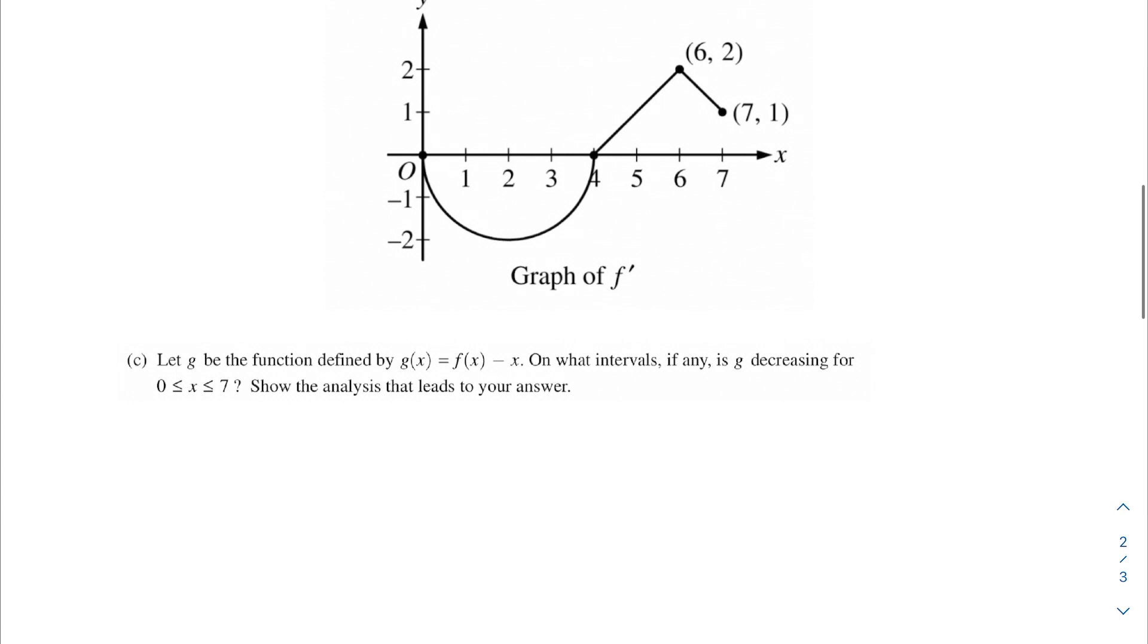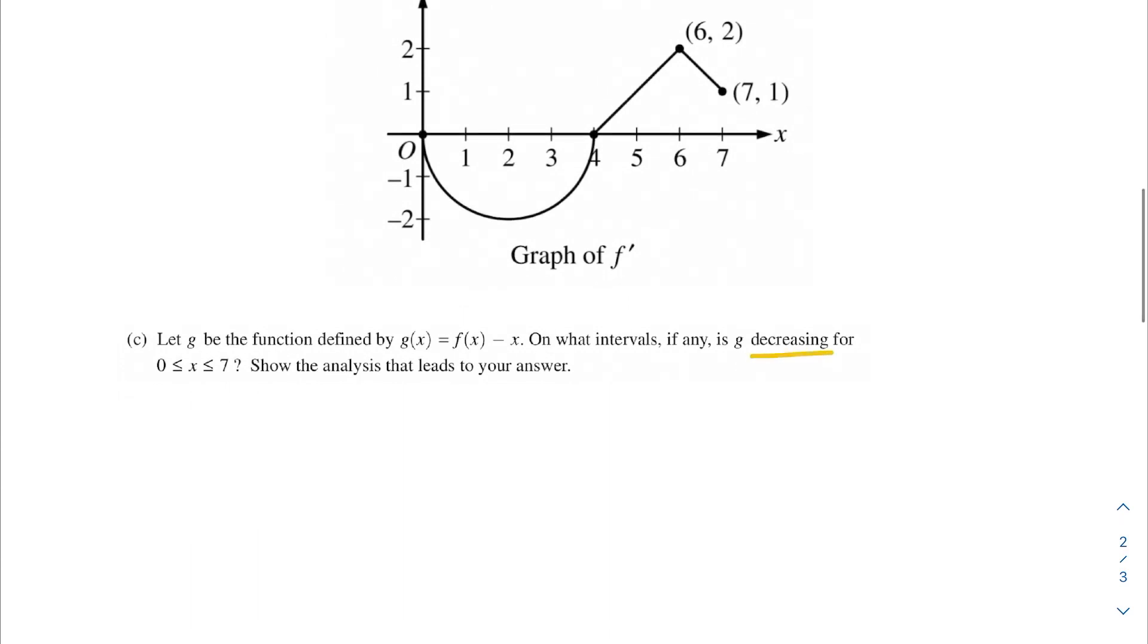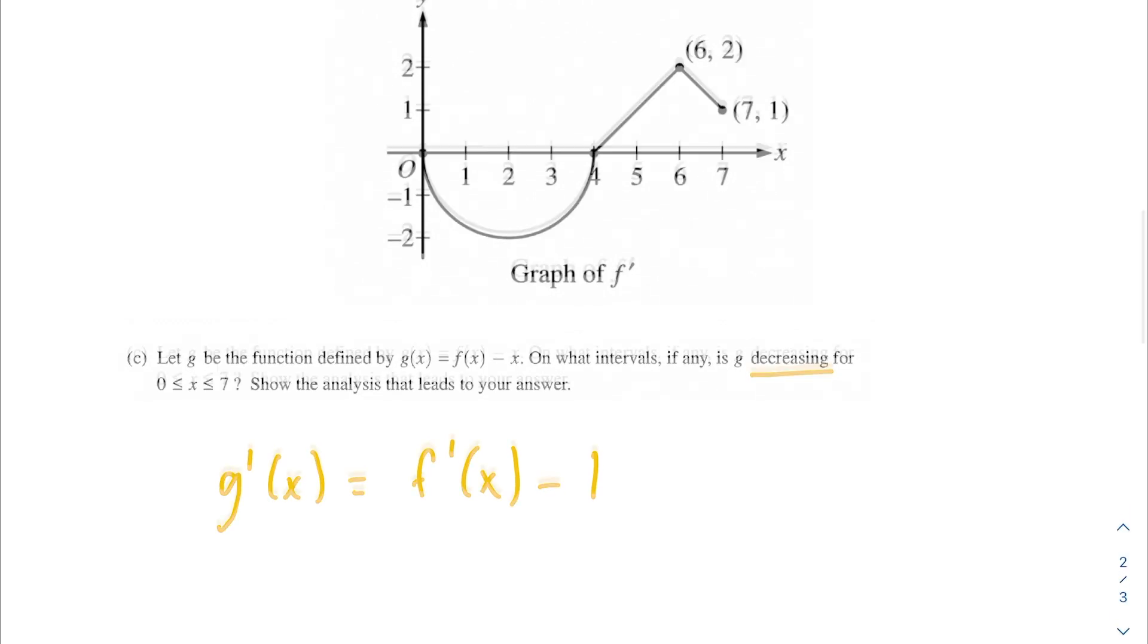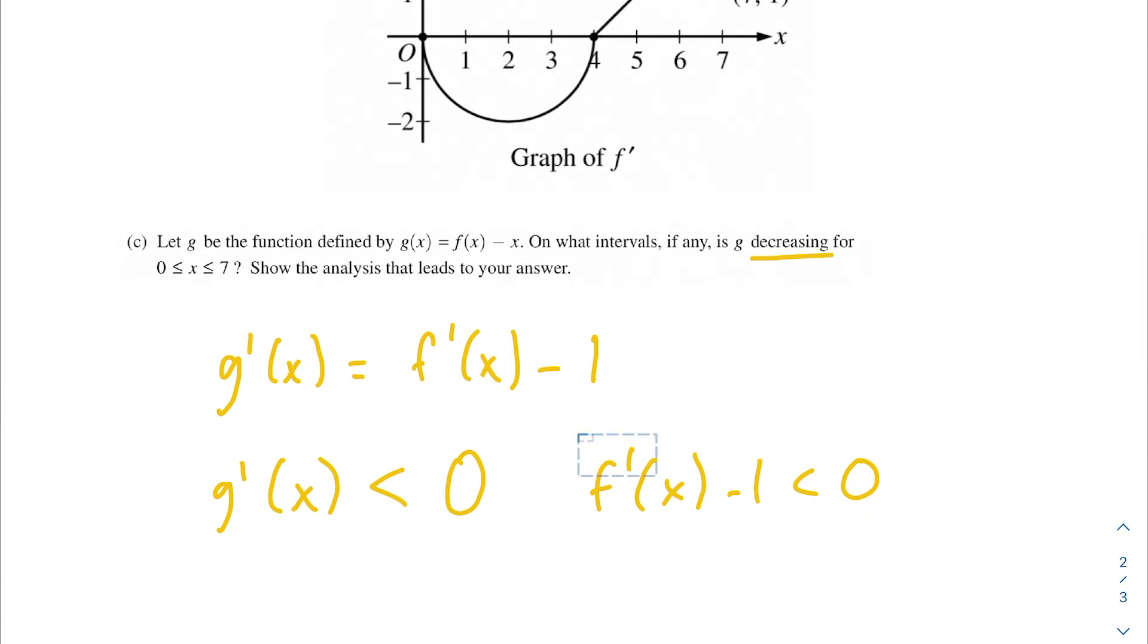We have this new function g, and it's equal to f(x) - x. If we want to find where it's decreasing, we're going to take the derivative of it. We have g'(x) = f'(x) - 1. Now we have it in a format we can work with because we have the graph of f'(x) in front of us. We know that g is going to be decreasing whenever the derivative is less than 0, so we can rewrite that as when f'(x) - 1 < 0.